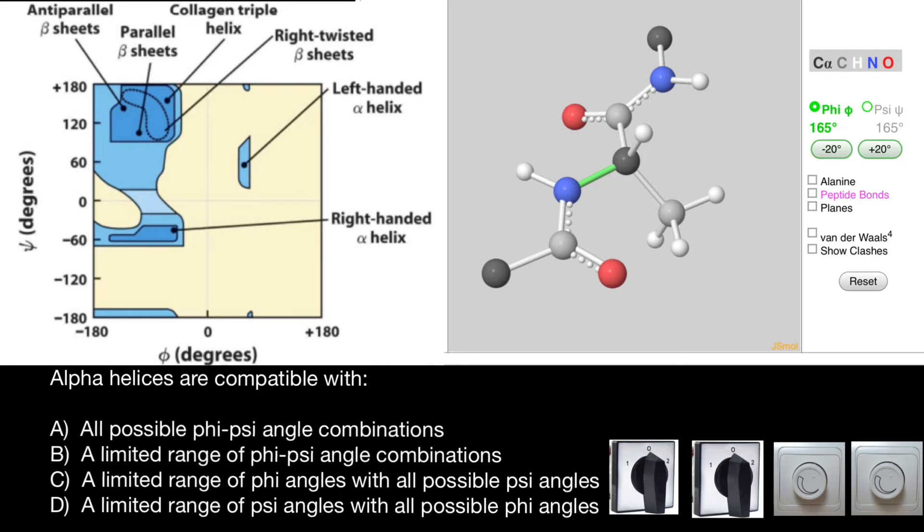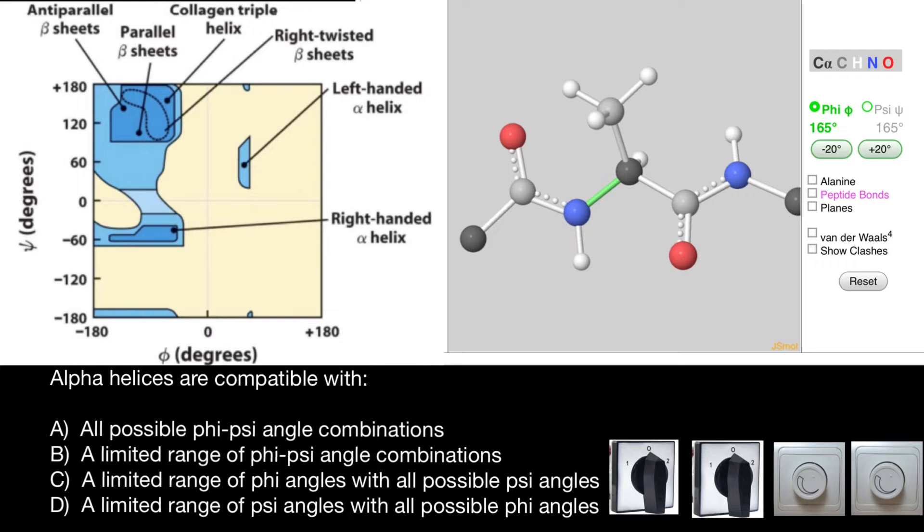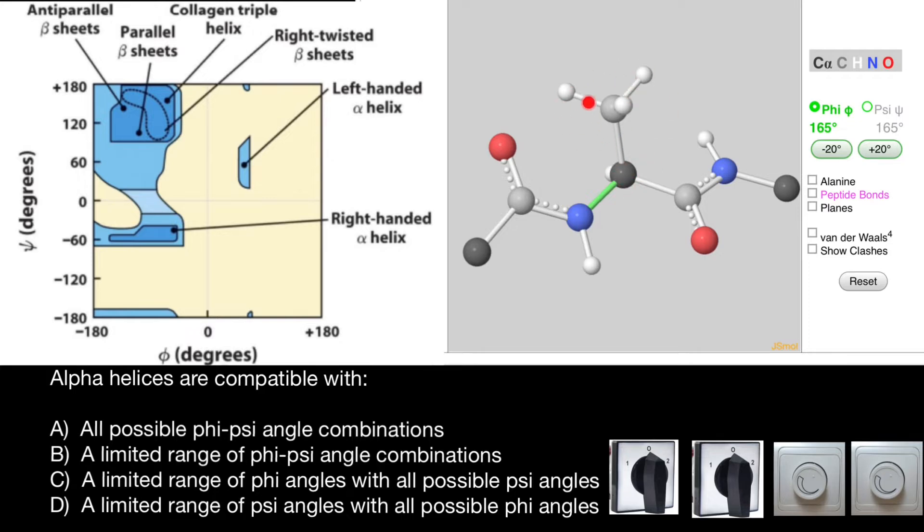Now I want you to take a look at this picture of the molecule. This is alanine with its central alpha carbon, a methyl group which is the R group, a carboxylic group, and an amino group.